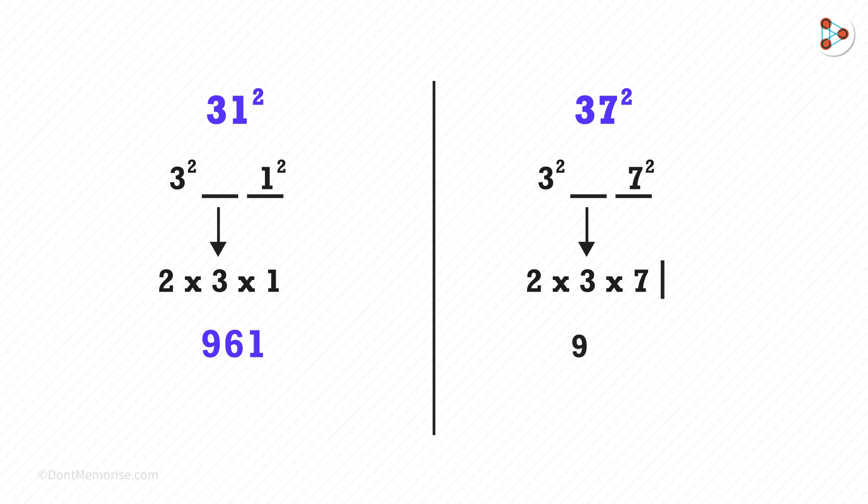3 squared is 9. The value of this is 42. And 7 squared is 49. By solving it further, we get the answer as 1369.